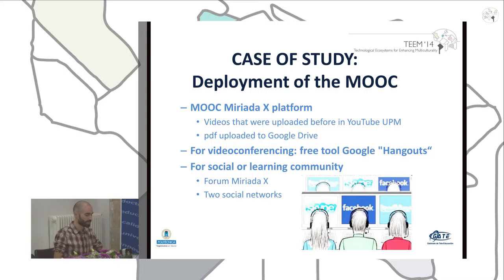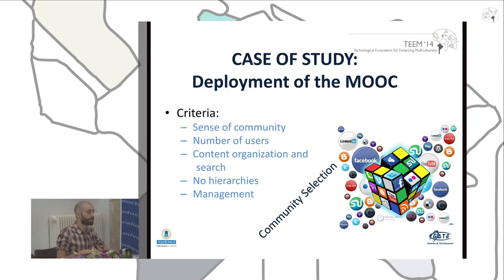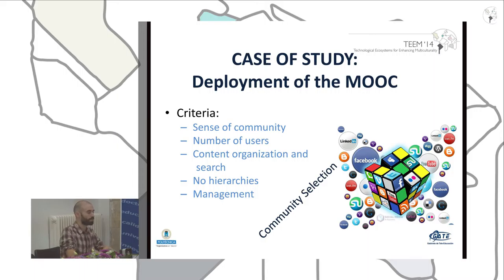For the social learning community, we used the platform forum with no great success because it did not work well, so we opted to use two external social networks to develop the learning community. We selected them based on a study with criteria including sense of community, number of users, content organization and search capability — using hashtags, mentions, or categories — no hierarchies, so that all member publications have the same relevance in the community, and ease of managing the community.